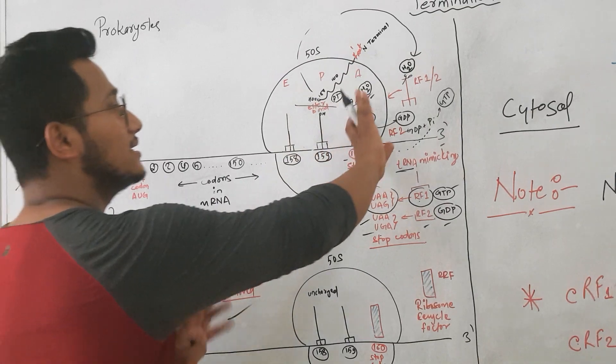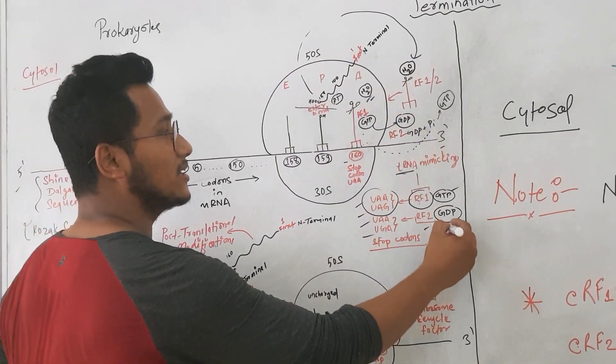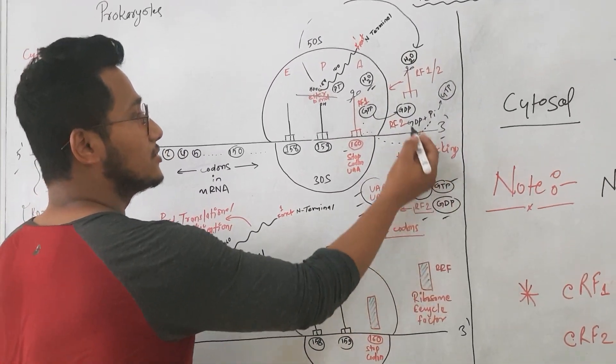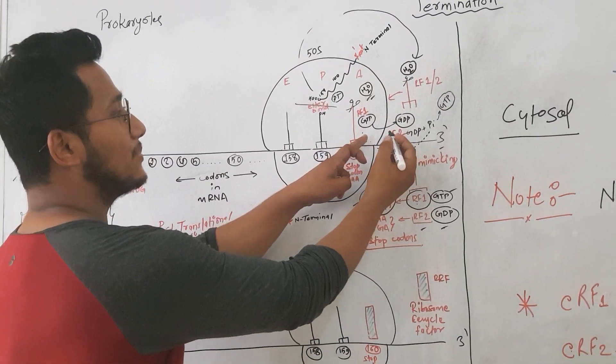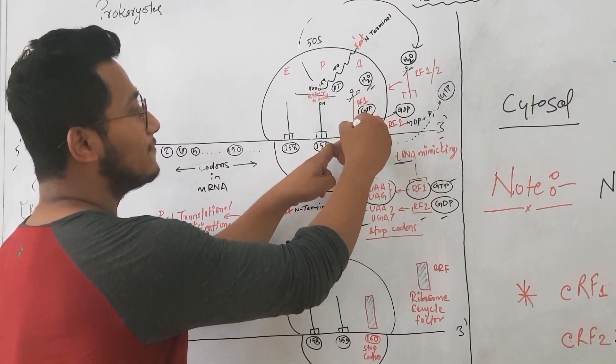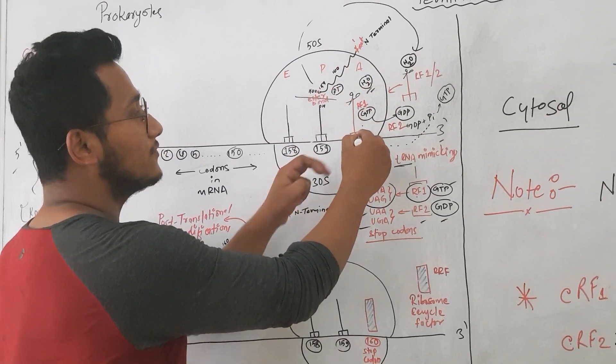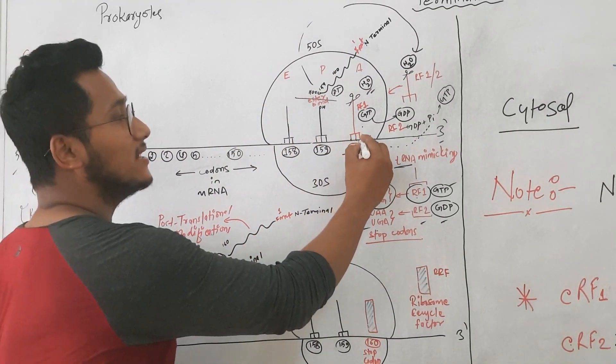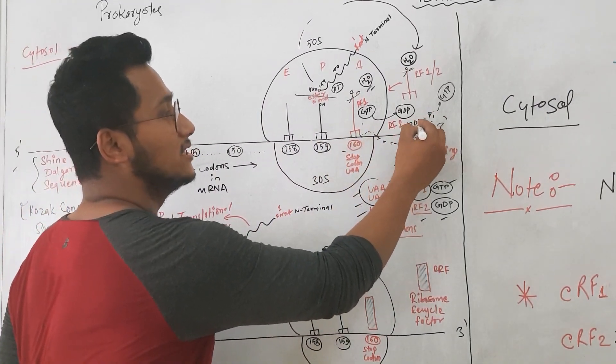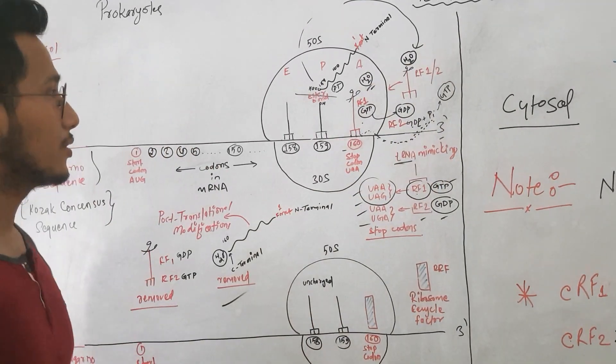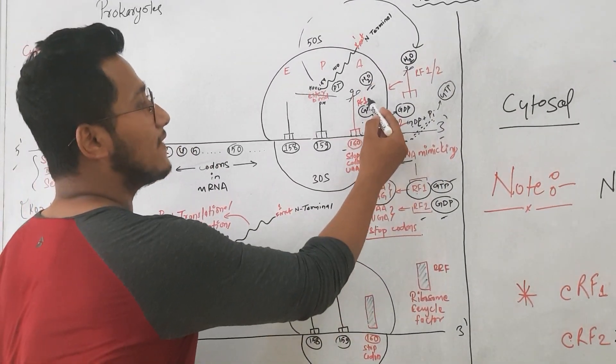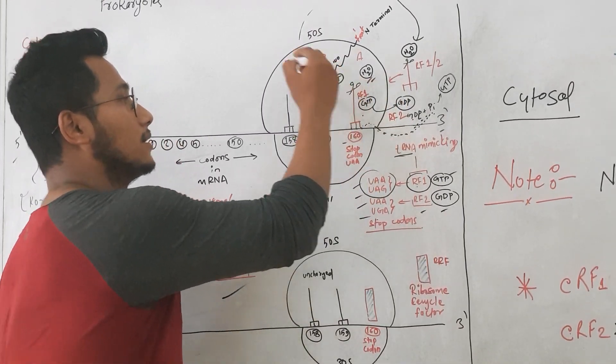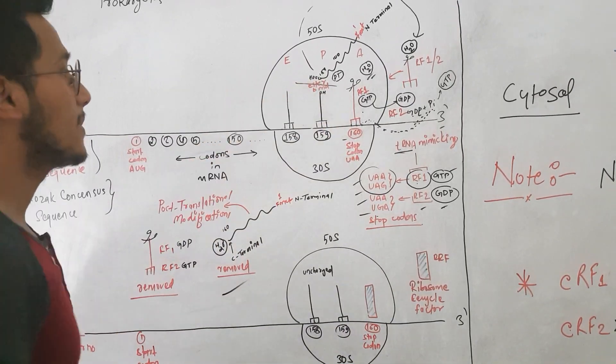What we have to understand is that as it hydrolyzes the ester bond, the peptidyl transferase helps to transfer this long peptide to the water molecule. In this way, your polypeptide is removed. After this is done, now RF3, which is a GTP-carrying protein—it is also a GTPase—when it comes here and when RF1 tries to move out of the stop codon, the energy released will be absorbed by GDP and it will be converted into GTP.